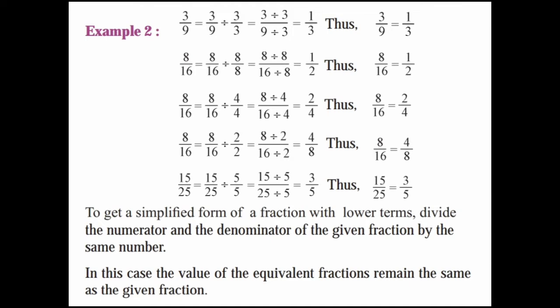8/16 can also give equivalent fractions: dividing by 4 gives (8÷4)/(16÷4) — 4 twos are 8, 4 fours are 16, giving 2/4. Dividing by 2 gives (8÷2)/(16÷2) — 2 fours are 8, 2 eights are 16, giving 4/8. For 15/25: (15÷5)/(25÷5) — 5 threes are 15, 5 fives are 25 — so that equals 3/5.